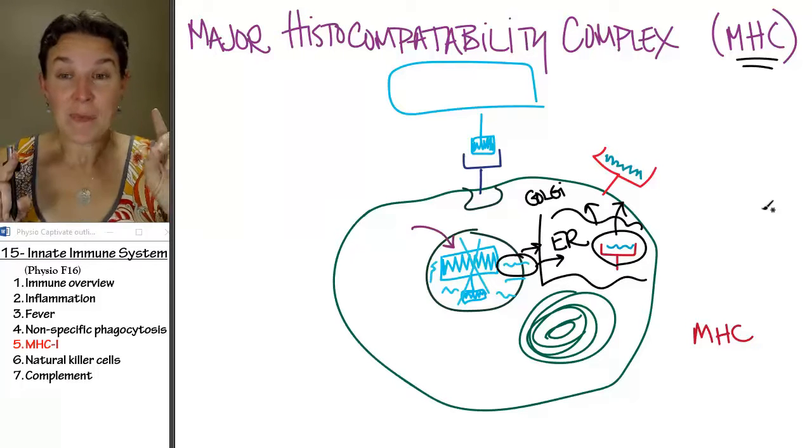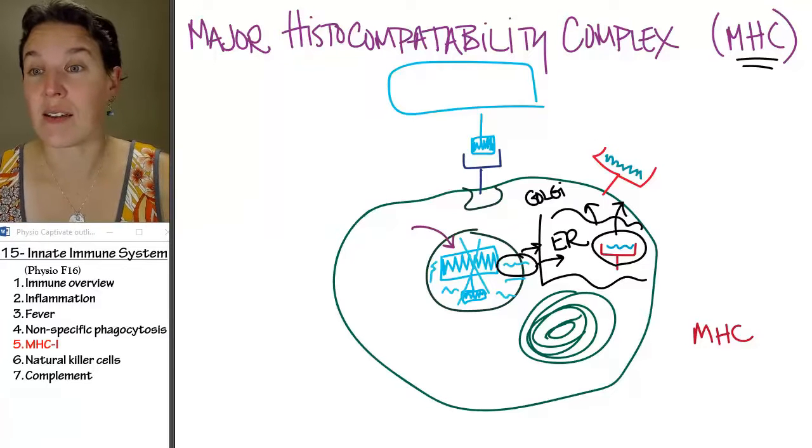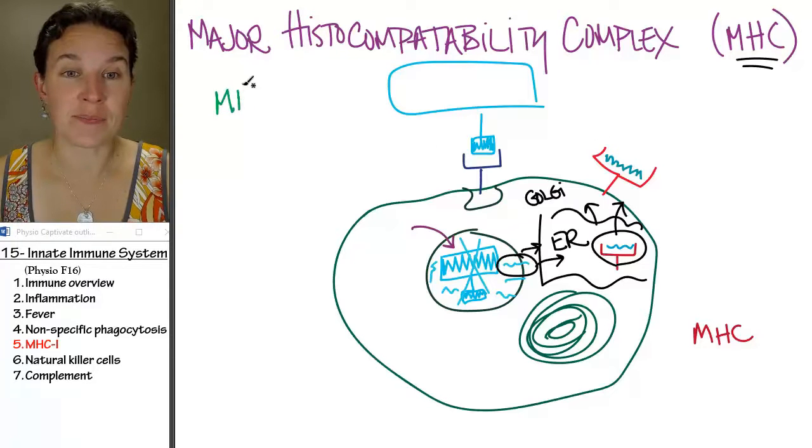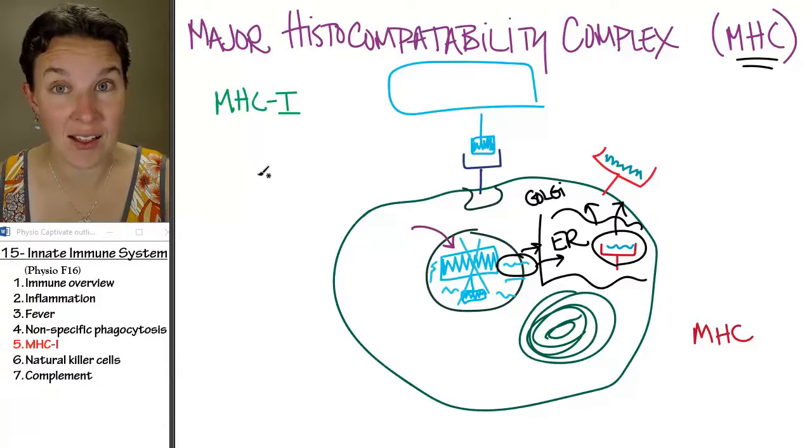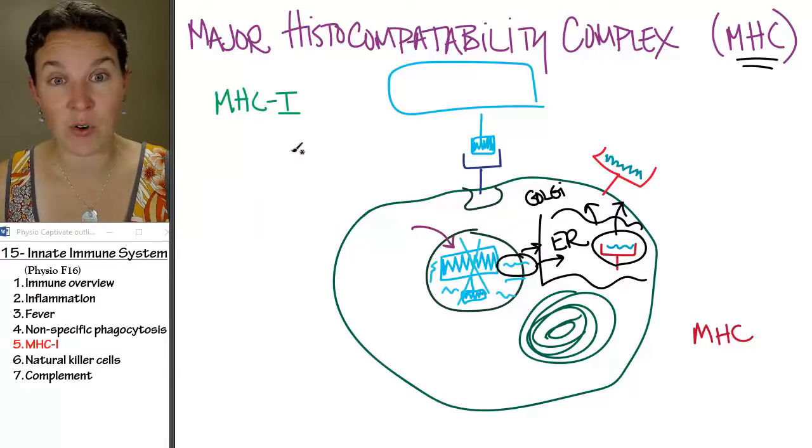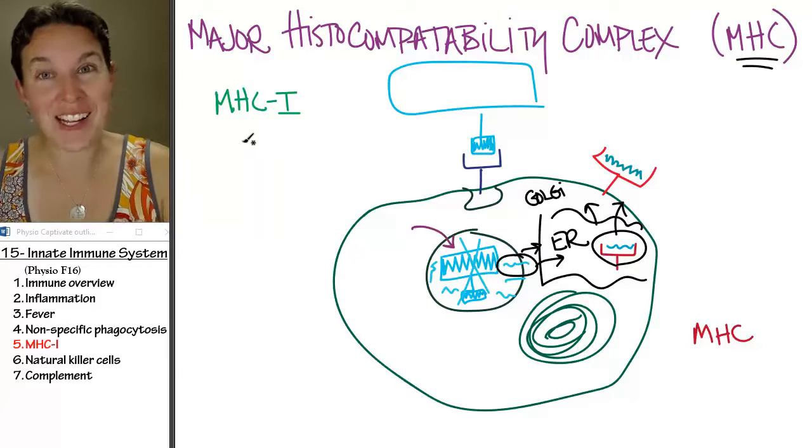Now, there's two flavors of MHC. There's MHC1. Every single nucleated cell in your body has MHC1 platforms. They're coded for by genes.